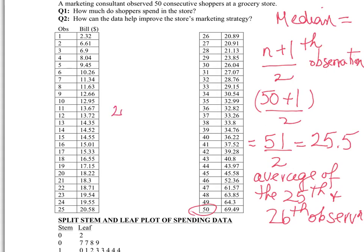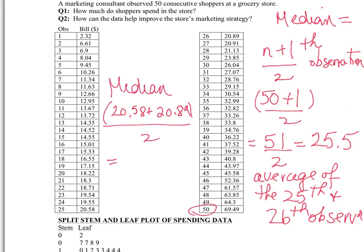So 20.58 plus 20.89 divided by 2 gives you your median in this case. This happened because 50 was an even number, and with an even number you don't have an exact middle — you've got to take the two middle observations and average them. Your answer, rounding to two decimal places, is 20.74.